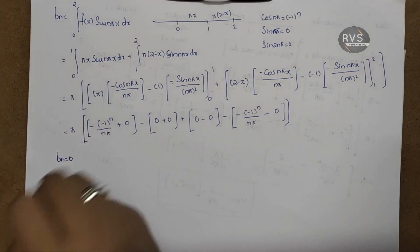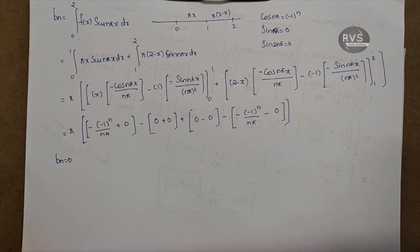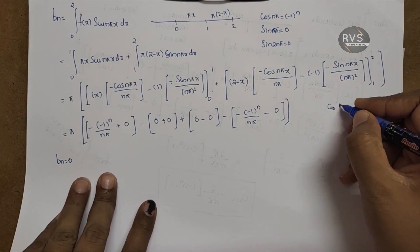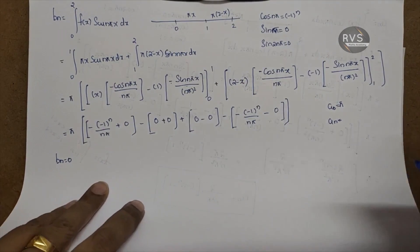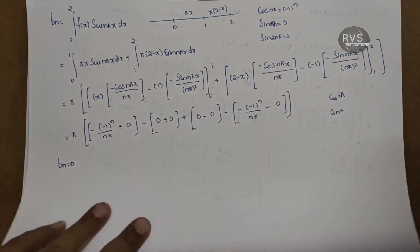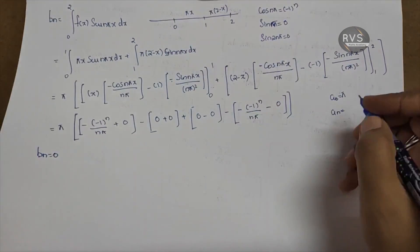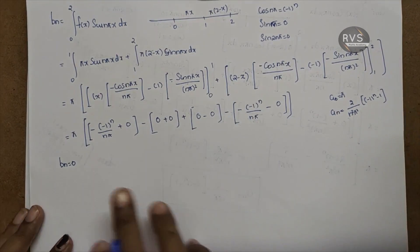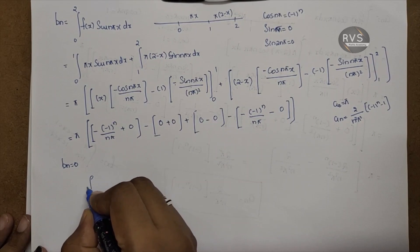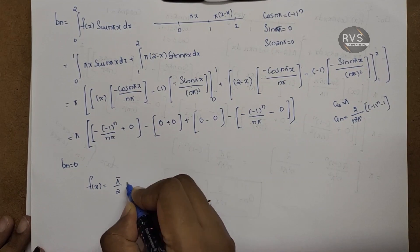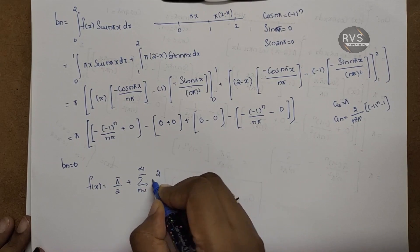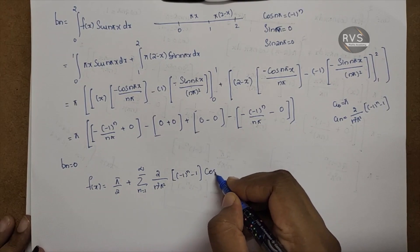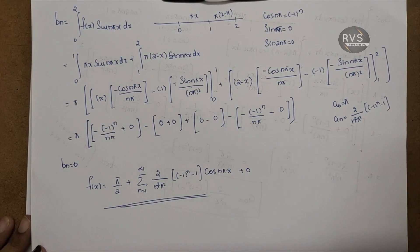Therefore b_n equals 0. The complete Fourier series is: F of x equals a0 by 2 plus summation n equal to 1 to infinity of a_n, which is 2 by n²π² into (minus 1)^n minus 1, into cos(nπx), plus b_n which is 0. That is the final answer.